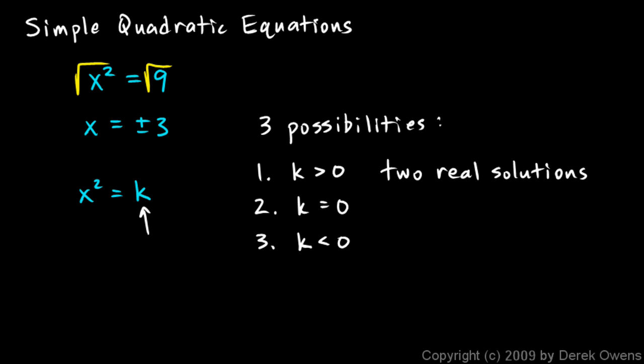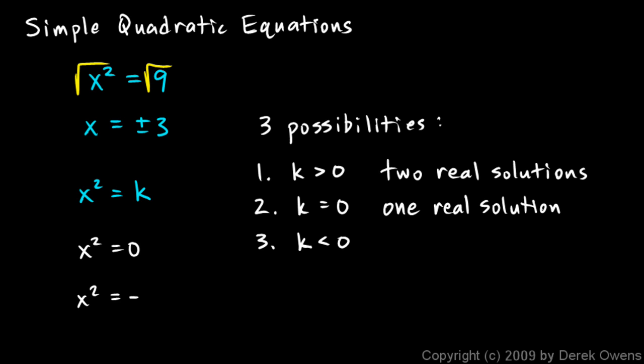If we solved this for whatever number k was, the solutions would be positive square root of k and negative square root of k. If k is equal to zero, it's the simple case — x squared equals zero — and x equals zero is your solution, so there is one real number solution. And if k is less than zero, like x squared equals negative five, there is no real number you can square to get negative five, because squaring always gives a positive number. So in that case, there are no real number solutions.